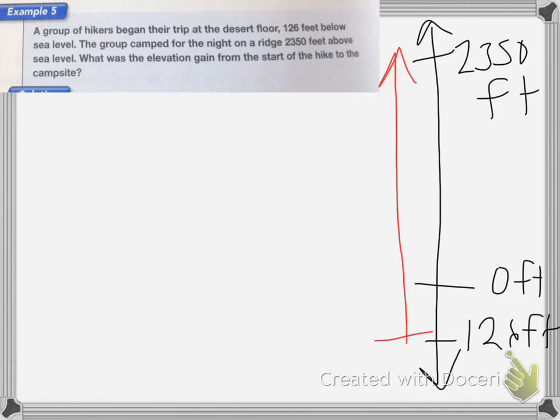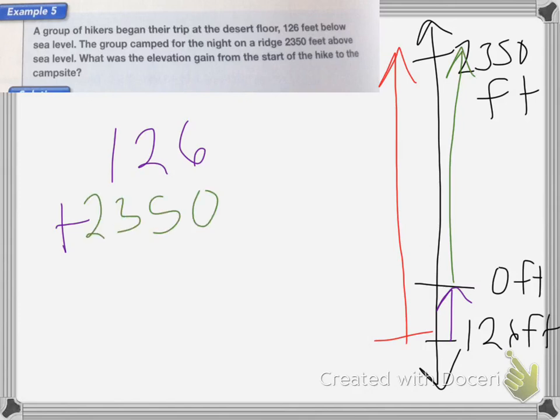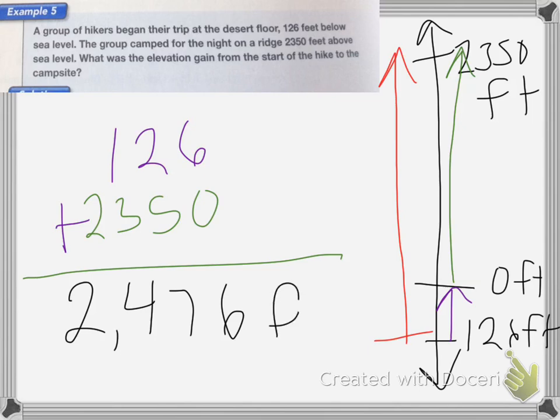So first, I have to go from 126 to zero, so that's going to be 126 plus the 2,350 feet they continue to climb, so I'm going to add 2,350 feet to figure out the total amount that they climbed. Okay, 6, 7, 4, 2, so they climbed a total of 2,476 feet that day.